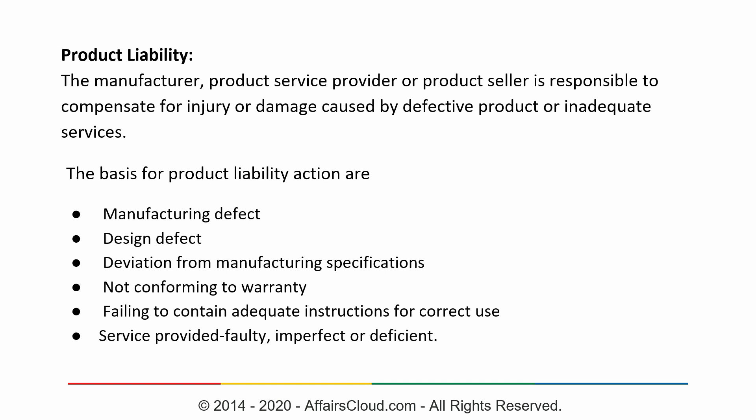Regarding product liability, the bases for product liability action under the new act include: manufacturing defects, design defects, deviation from set manufacturing specifications, not conforming to the warranty period issued by the service provider or seller, failing to contain adequate instructions for correct use (such as in manuals or catalogs provided with equipment), and faulty, imperfect, or deficient service. In case of one or more of these defaults, the manufacturer, product service provider, or product seller shall be held responsible to compensate for injury or damage caused by the defective product or deficient service.